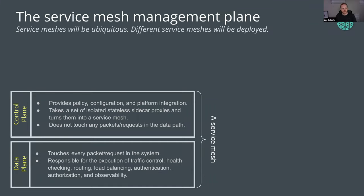To understand what a management plane is, it helps to talk about network planes. To characterize a service mesh architecturally at a high level, there are generally two planes a service mesh is comprised of: the data plane and the control plane. If you're a network engineer, these terms are probably really familiar to you, as is the term management plane. If you've spent time around Kubernetes and other systems in the cloud native ecosystem, you probably have some familiarity with what they do.